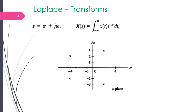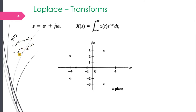Recall that in Laplace transform, we represent any signal using a complex exponential: e raised to ST, which equals e raised to minus sigma plus j omega times t. This equals e raised to minus sigma times e raised to minus j omega t. The sigma component is in addition to the complex sinusoid. For Fourier transform, we use only the complex sinusoid component, whereas in Laplace transform we have this additional exponential term.